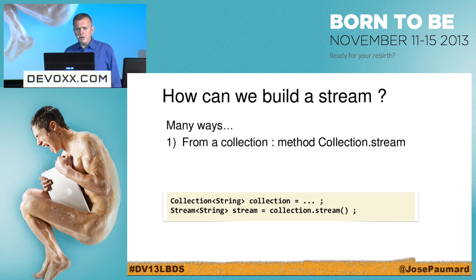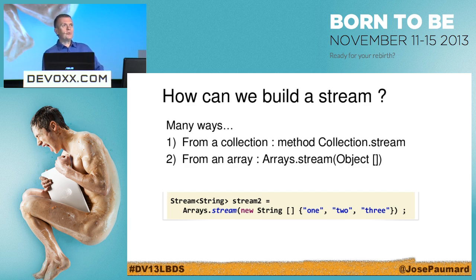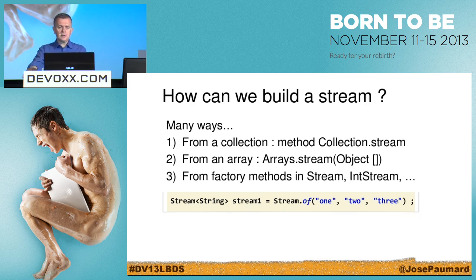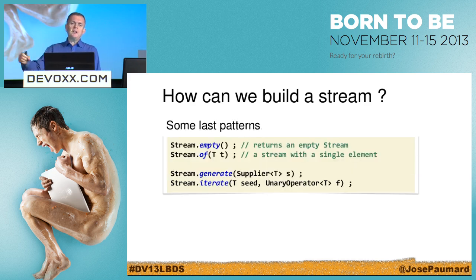How can we build a stream? There are many patterns. First, I can call the stream method on a collection. There's also the Arrays class with static methods — a method called stream which allows me to build a stream on an array, for example an array of strings. I also have factory methods in the Stream class — remember, Stream is an interface, and I can put static methods in interfaces in Java 8. So Stream.of(1, 2, 3) will give me a stream of strings.